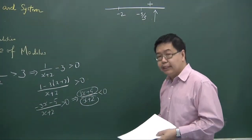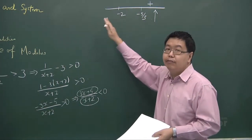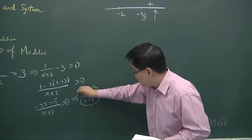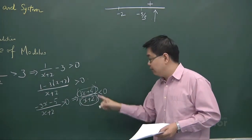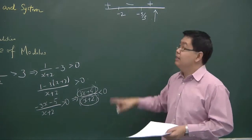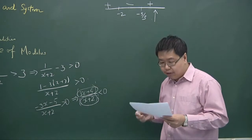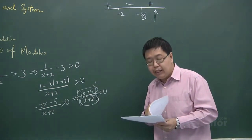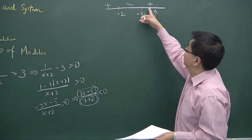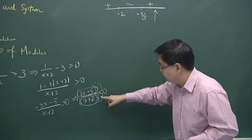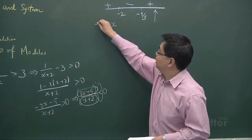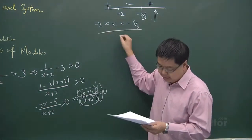Since we are only interested in the sign (positive or negative), we use the alternating sign property: if each factor is raised to an odd power, the sign alternates across each critical point. So if this region is plus, the next is minus, and the next is plus again. Since we are looking for less than 0, we identify the negative region, which is from x equals negative 2 to x equals negative 5 over 3. Therefore, the answer is negative 2 less than x less than negative 5 over 3.